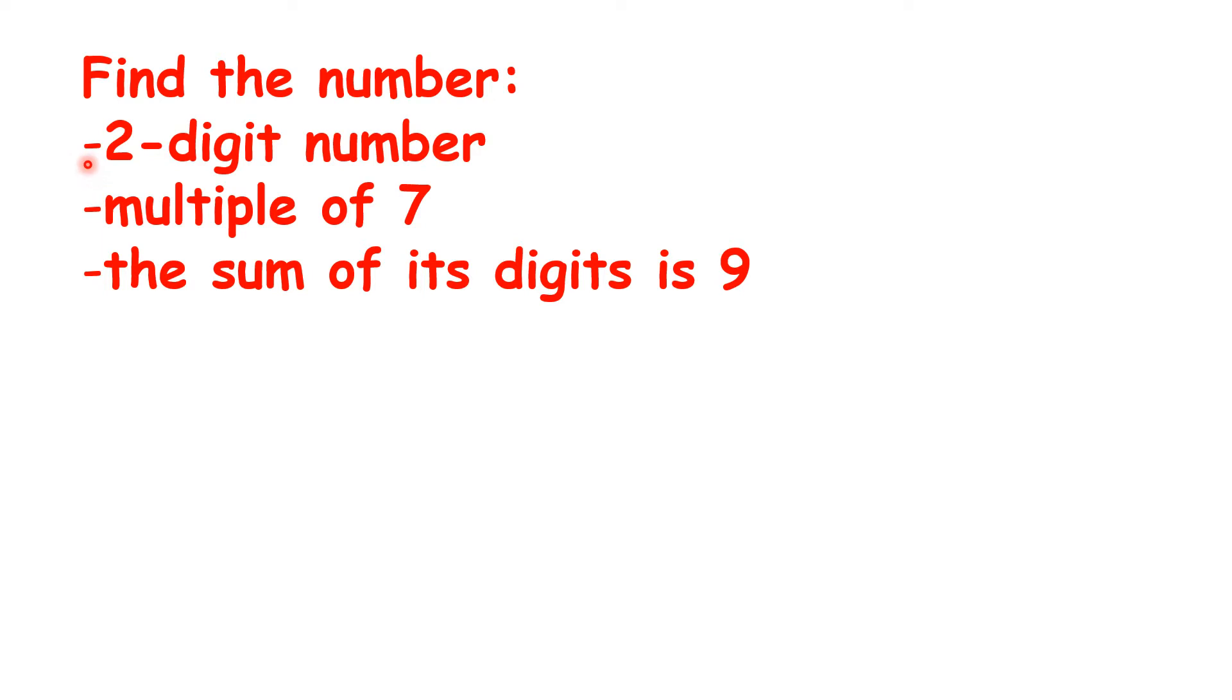Now here, we're looking for a two-digit number which is also a multiple of seven, and the sum of its digits is nine. So let's go through our seven times table. One plus four is five, so it's not 14.